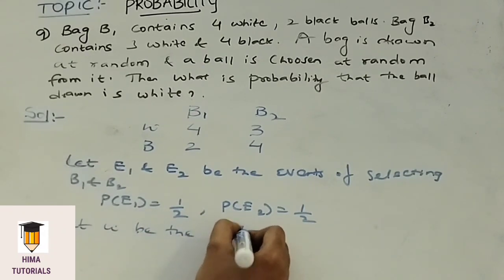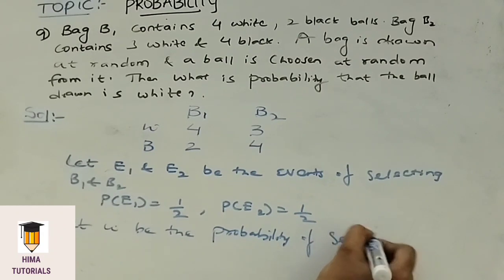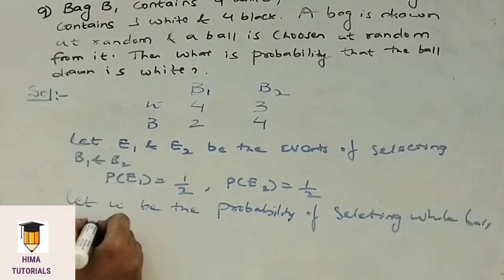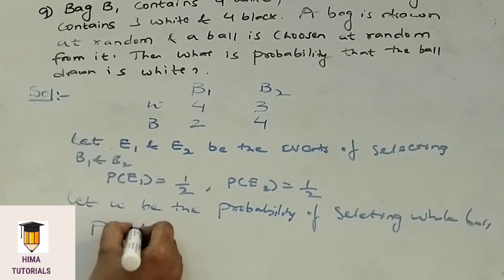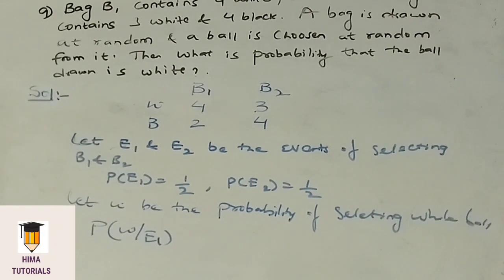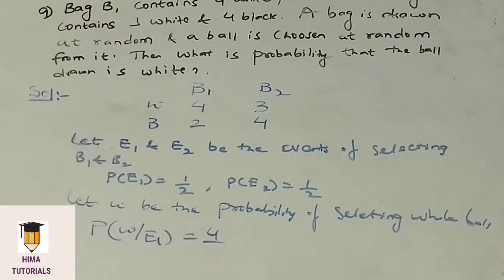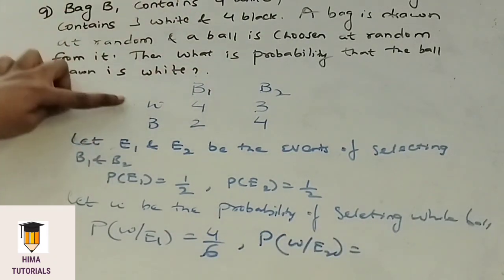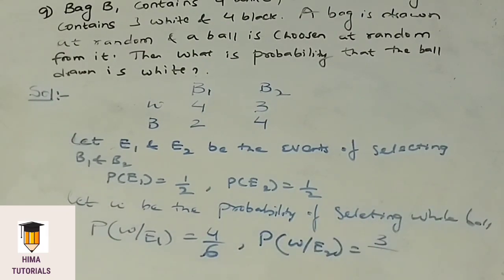Let W be the probability of selecting a white ball. P of W given E1 means probability of selecting a white ball from bag B1. In bag B1 there are 4 white balls and total 4 plus 2 equals 6 balls, so P of W given E1 equals 4 by 6. Similarly, P of W given E2: in bag B2 there are 3 white balls and total 3 plus 4 equals 7 balls, so P of W given E2 equals 3 by 7.